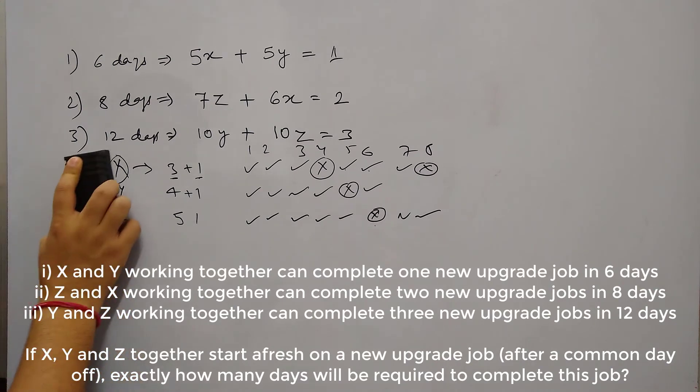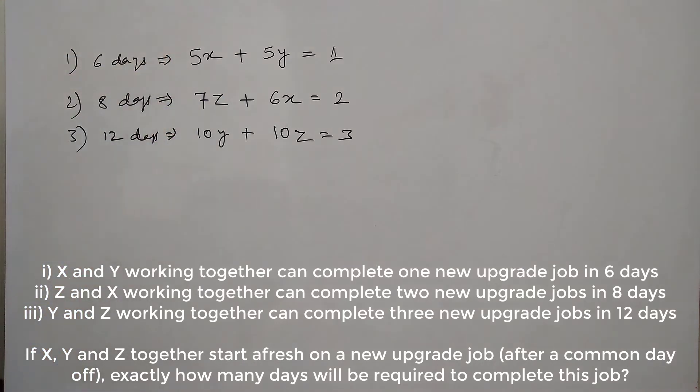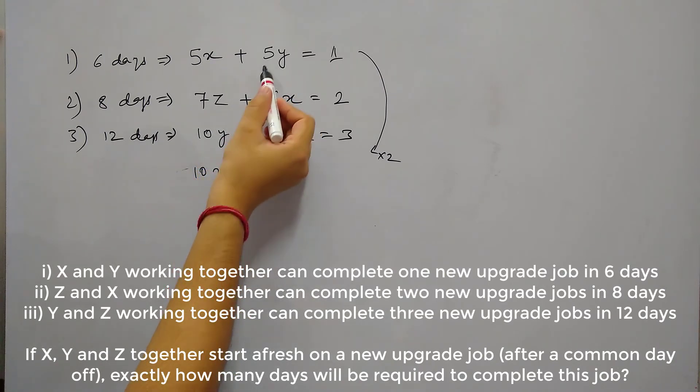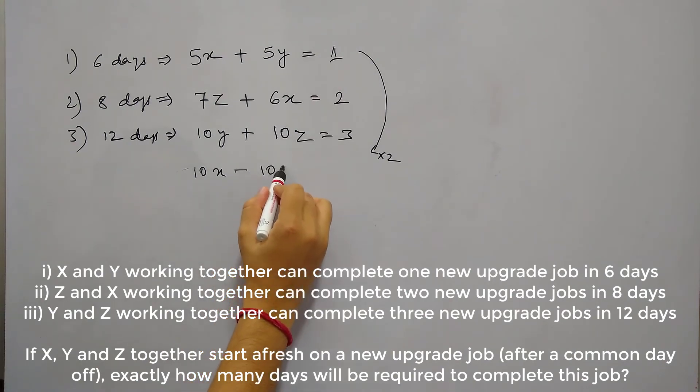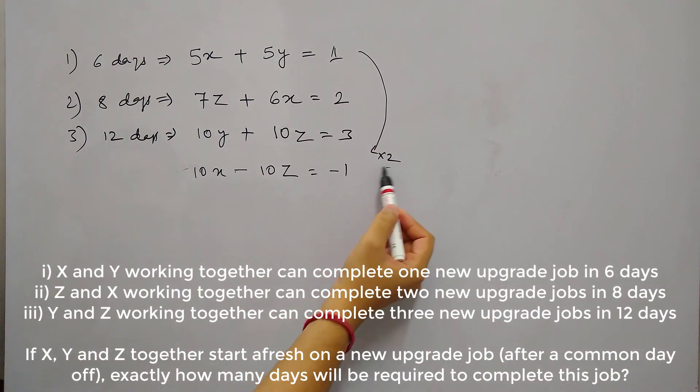So X, Y and Z they are together working on a job and we need to find out the days they will take to finish the job. So now out of these 3 equations, we have 3 variables and 3 equations. So we can find out their values, values of X, Y and Z individually. So if we just multiply this equation 1 by 2 and subtract that from equation 3, then we will have, so 5X is multiplied by 2, so 10X plus this 10Y and this 10Y will be cancelled. We have multiplied this equation by 2, so this will be cancelled. And then we will have minus 10Z equals to, this is 2 and this is 3, so it will be minus 1. So we have multiplied equation 1 by 2 and subtracted it from 3. So this is what we have.